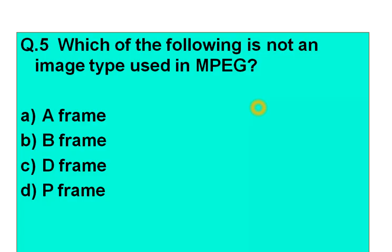Question number five: Which of the following is not an image type used in MPEG? Option A: A frame. Option B: B frame. Option C: D frame. Option D: B frame.